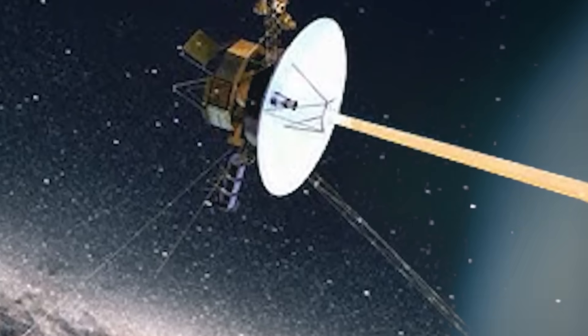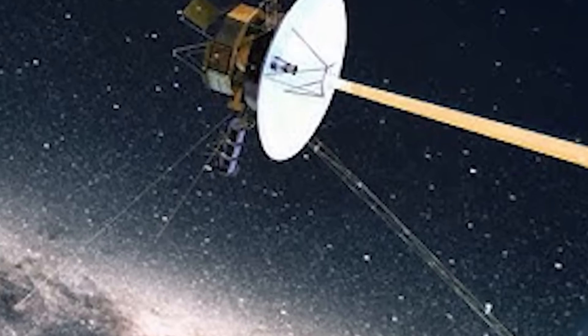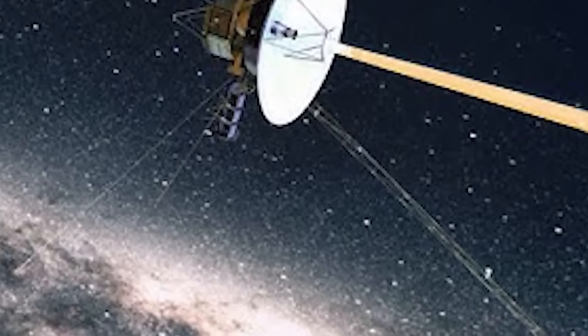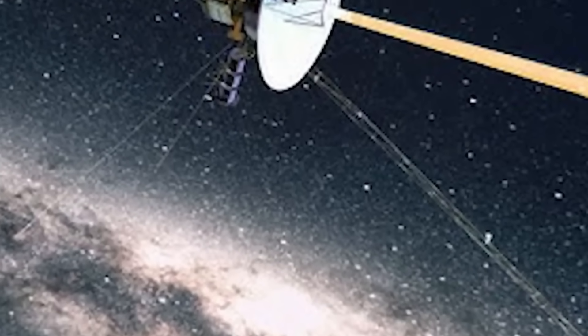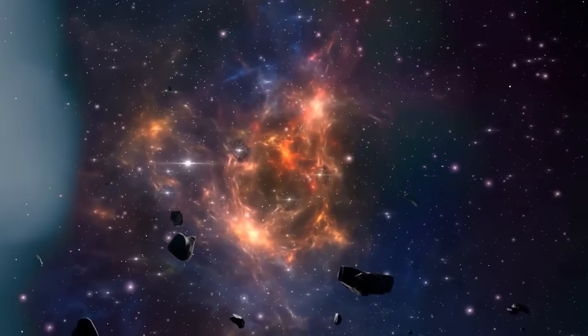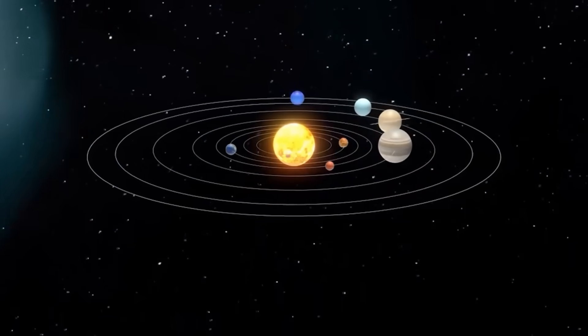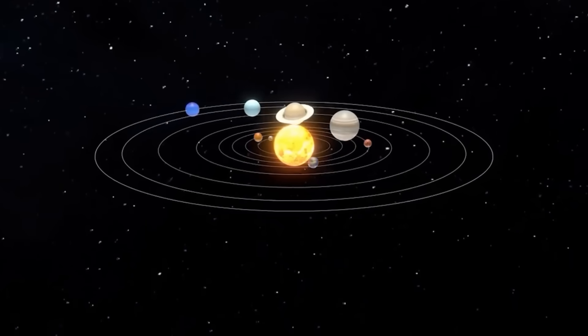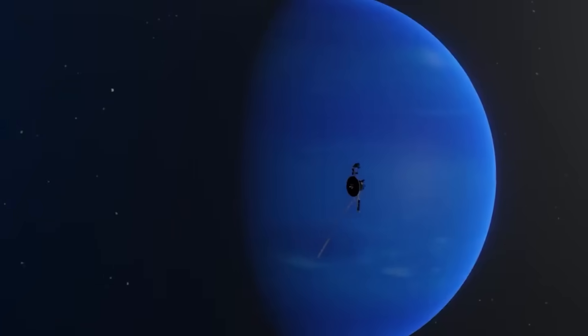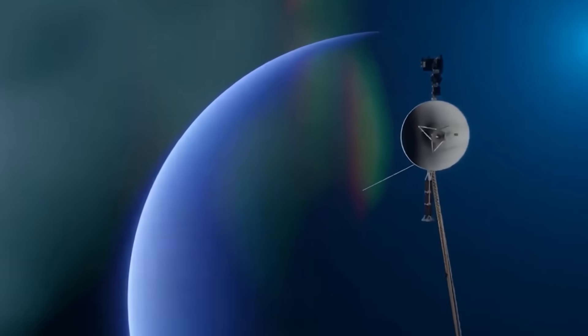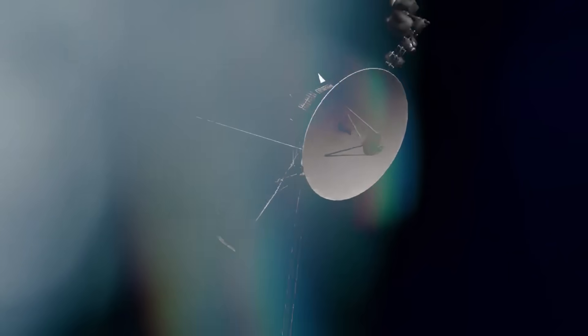Attached to Voyager 2 is a message, a golden disk etched with humanity's greetings, sounds, music, and diagrams. A beautiful attempt at interstellar diplomacy. But within that disk are detailed instructions, how to locate Earth, how to read the disk, how to understand who we are. For decades, this was celebrated as a symbol of hope. But in light of Voyager 2's discoveries, some now see it differently.